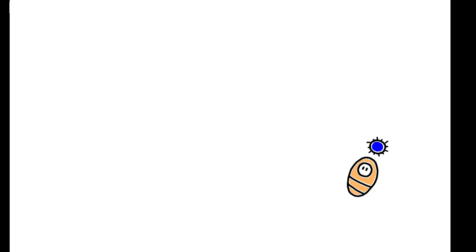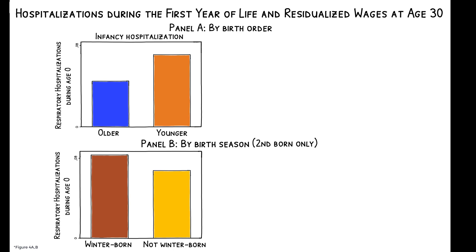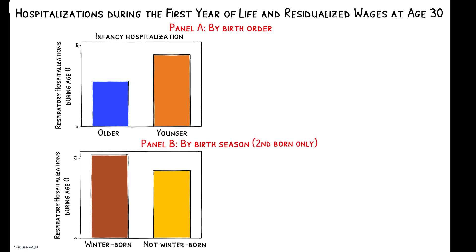What are the long-term consequences? This figure shows differences in acute respiratory disease hospitalizations during infancy by age 30 across the same groups. In both cases, the groups with the highest rates of infancy hospitalizations also experience lower earnings in adulthood. But of course, these patterns are only suggestive.